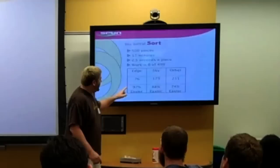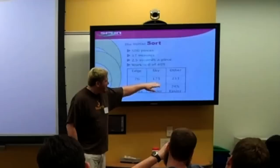But, what I have done is created very nice borders. For the edge, I have 76 pieces. For the sky, I have 173. And for the rest, I have 251.